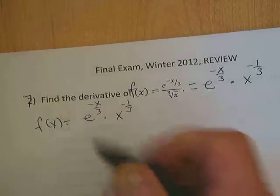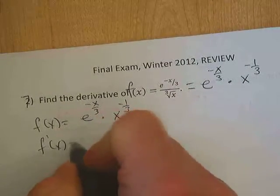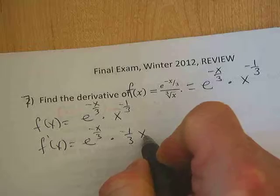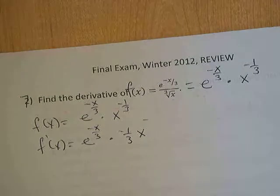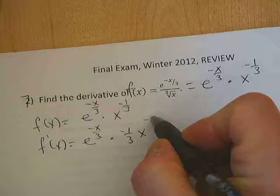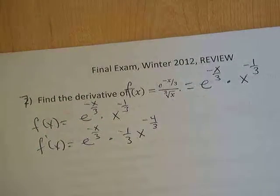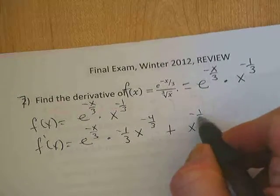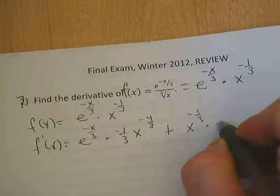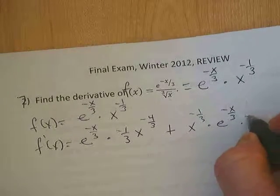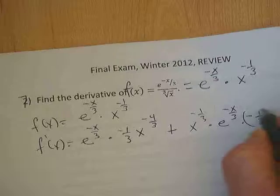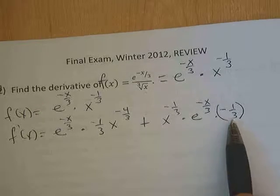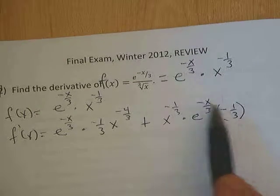So, this times the derivative of that, e to the negative x over 3 times negative 1 third x to the negative 4 thirds, plus x to the negative 1 third times derivative of this which is going to be e to the negative x over 3 times negative 1 third. Where did the negative 1 third come from here? Derivative of the exponent, very good.